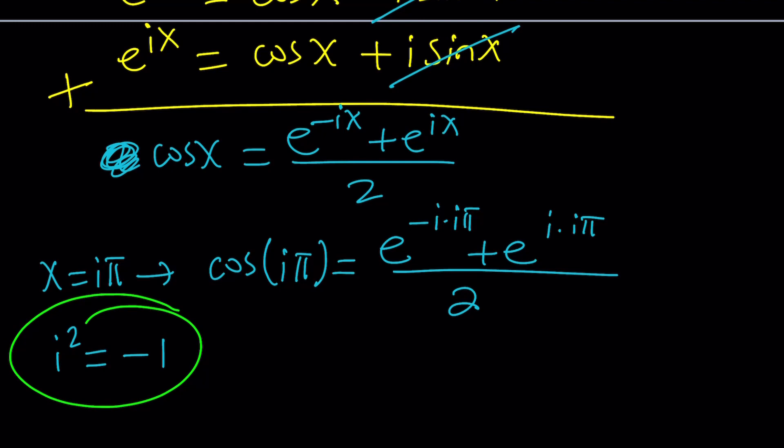So using that identity or equation, the value of i squared, we can go ahead and write this as cosine of i pi equals e to the power pi, plus e to the power negative pi, divided by two.